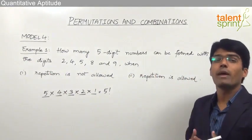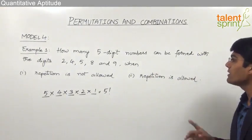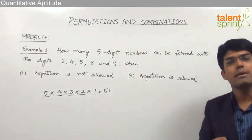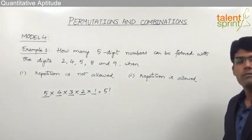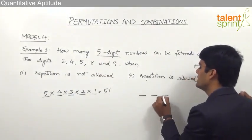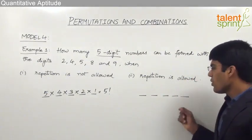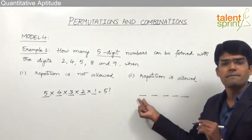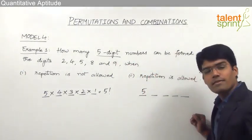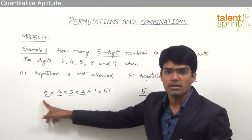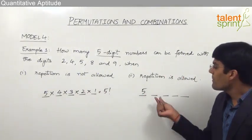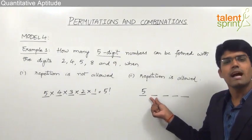Now a special case is when repetition is allowed — that means how many 5-digit numbers can be formed with digits 2, 4, 5, 8, and 9 when repetition is allowed. That means a particular digit can come any number of times. We have 5 positions. Going by the multiplication principle, the first position can be filled in 5 ways — 2, 4, 5, 8, or 9. Now coming to the second position, it can again be filled in 5 ways because repetition is allowed.